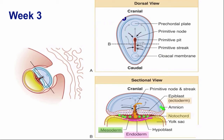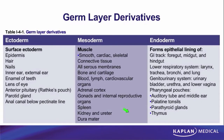We now have all of the germ layers of an embryo: ectoderm, mesoderm, notochord, and endoderm. As we said, all of them came from the epiblast — all of them came from the epiblast — because all of the hypoblast cells die off. So we have all the germ layer cells we need to go on to form the embryo.